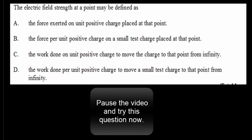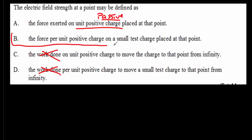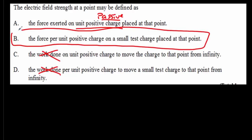Here's a quick IB question based on the definition of electric field strength. Pause the video, try the question, and come back for the answer. You can eliminate the two options involving work done — that's about electric potential, which we study next. The electric field strength has to do with force per unit charge. Answer A looks close to what I described, but it doesn't mention the word 'passive,' so it's not correct. The correct answer is B: the force per unit charge acting on a small test charge. By making it small, you're saying it creates an insignificant electric field of its own.